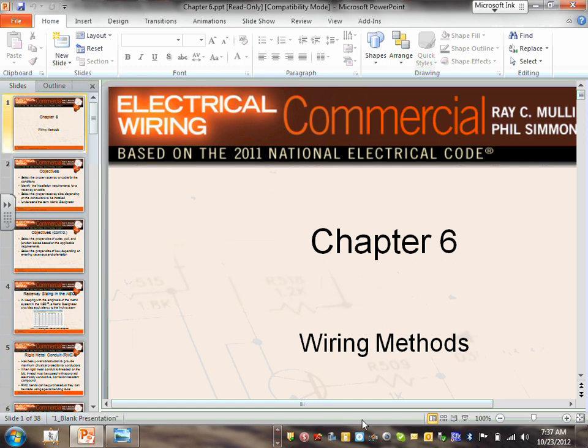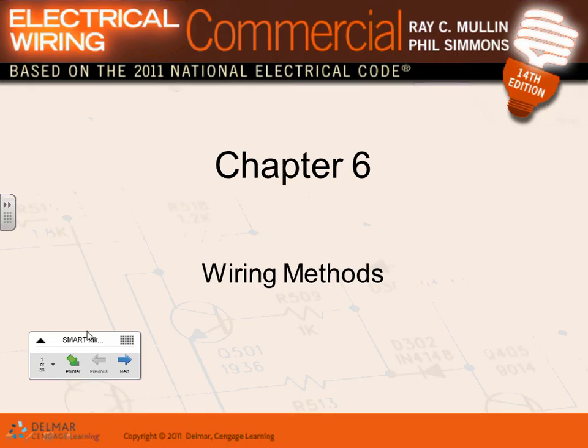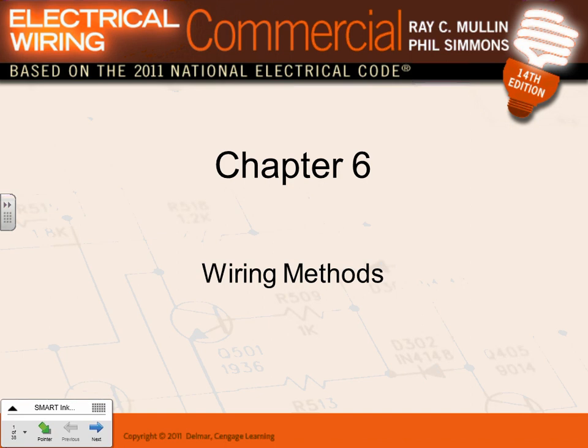Chapter six talks about wiring methods. When you become an electrical designer, the first thing you need to decide is what type of wiring methods matches your application. Between EMT conduit and MC cable, you almost cover 90% of your wiring methods. This chapter talks about other applications for conduits and cables. If you want to know why you can't use something like barbed wire as a wiring method - it's because it's not in chapter three.